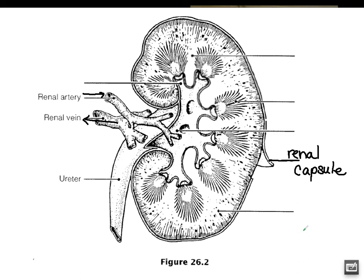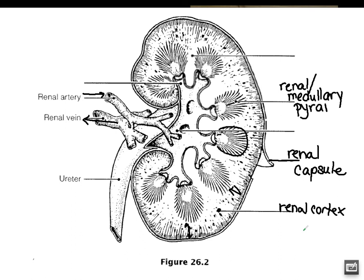The outer layer is the renal cortex — the space kind of above these feathery-looking things. These feathery-looking things are located within the renal medulla, and they are called the medullary pyramids. I prefer the term 'medullary' because it tells you what layer they are in. The space in between these medullary pyramids is called the renal column.